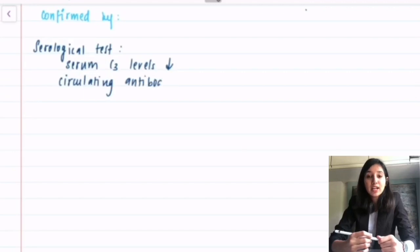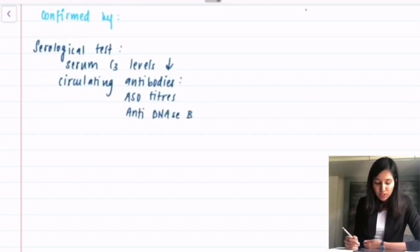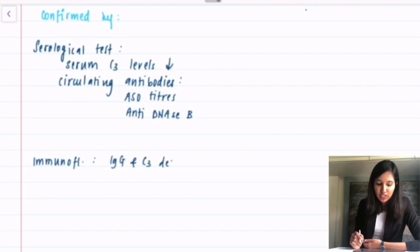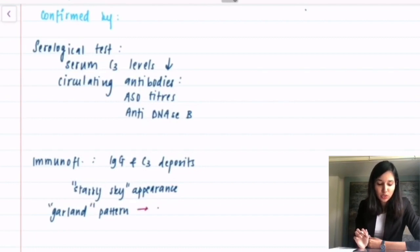This diagnosis can be confirmed by serological tests. We could check for serum C3 levels which will be low in PSGN and we can check for circulating antibodies against streptococcal antigen which are ASO and anti-DNase B. Immunofluorescence microscopy reveals diffuse granular deposits of IgG and C3 giving rise to a starry sky appearance. More extensive immunoglobulin deposition throughout the glomerular capillary wall gives us garland pattern which is associated with a poor prognosis.